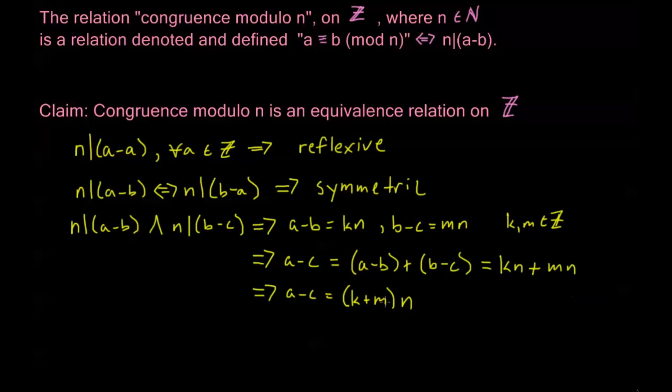Well, if a minus c is equal to this product where one of the factors is n, that means that n divides a minus c by definition, right? This implies that n divides a minus c. So, in fact, we do have that this congruence is transitive.